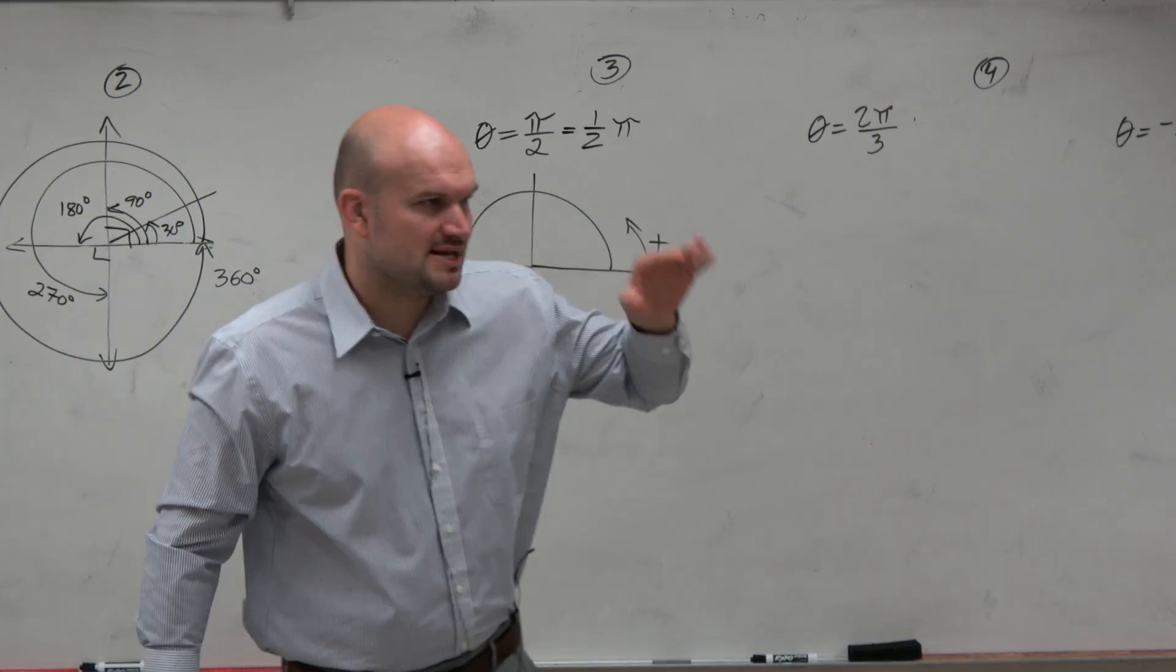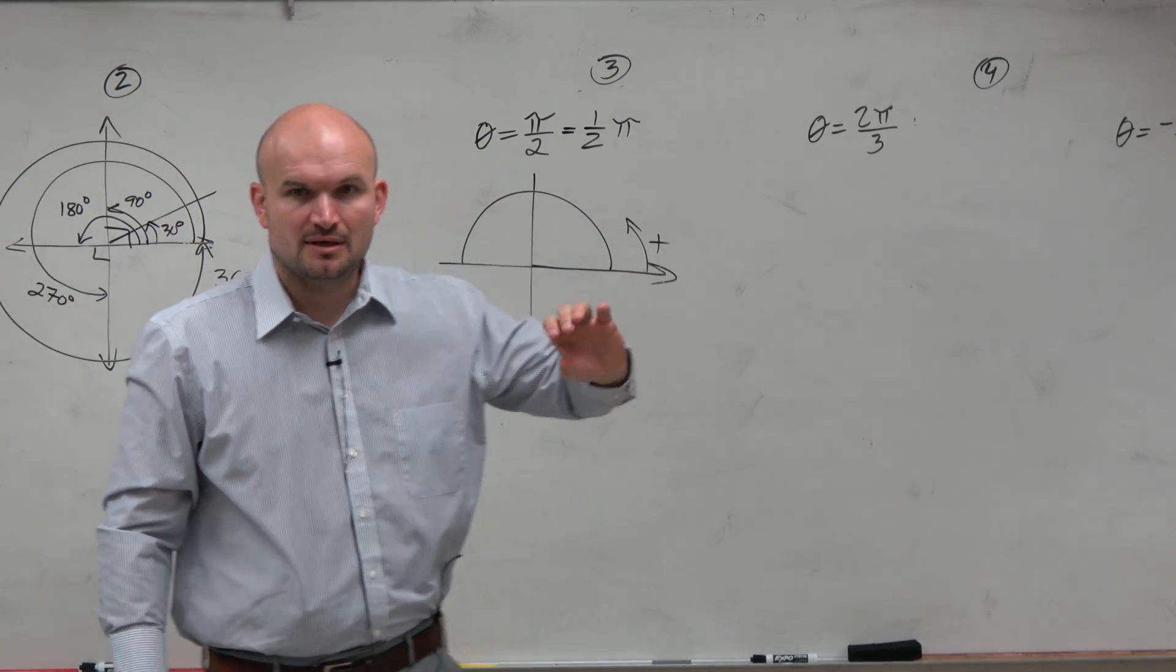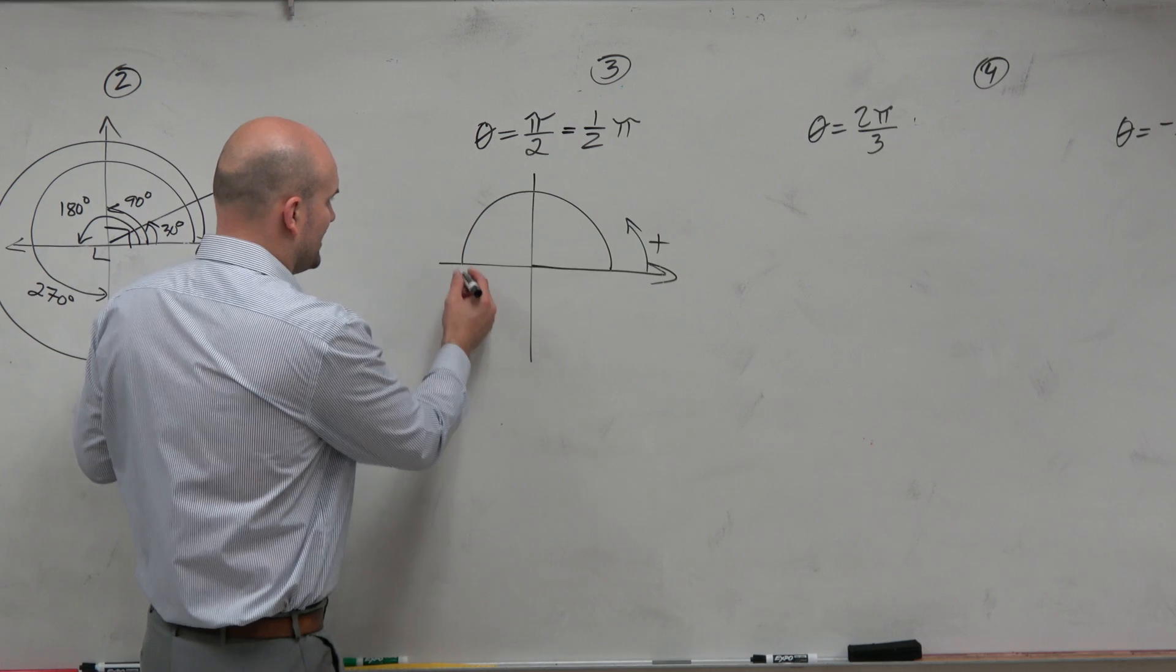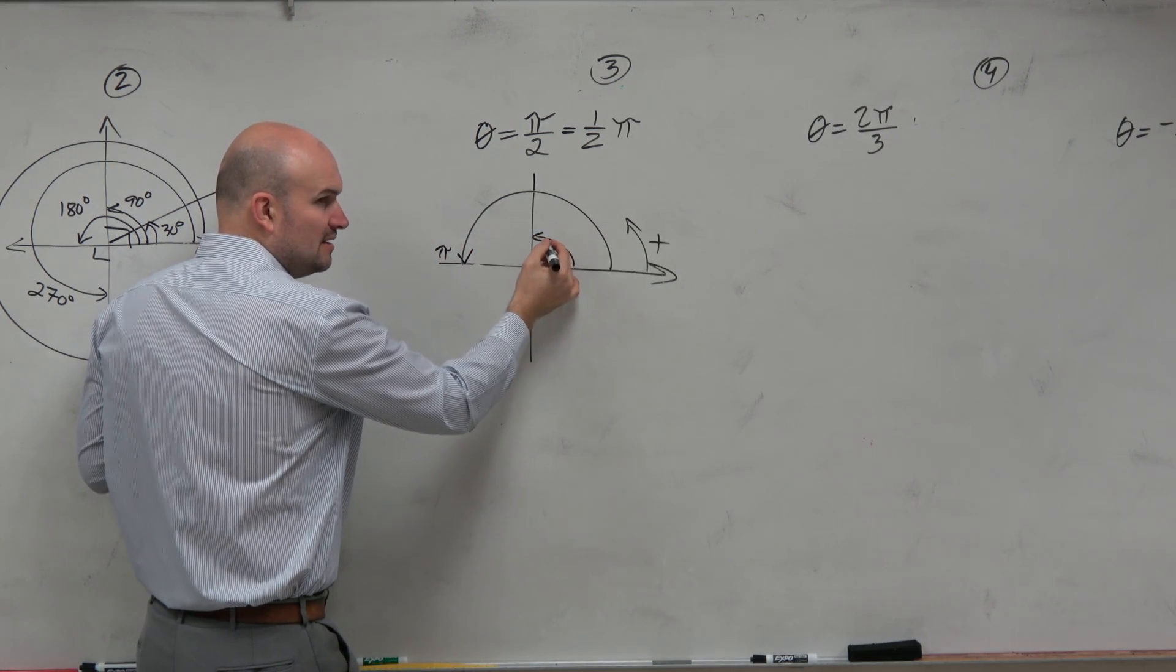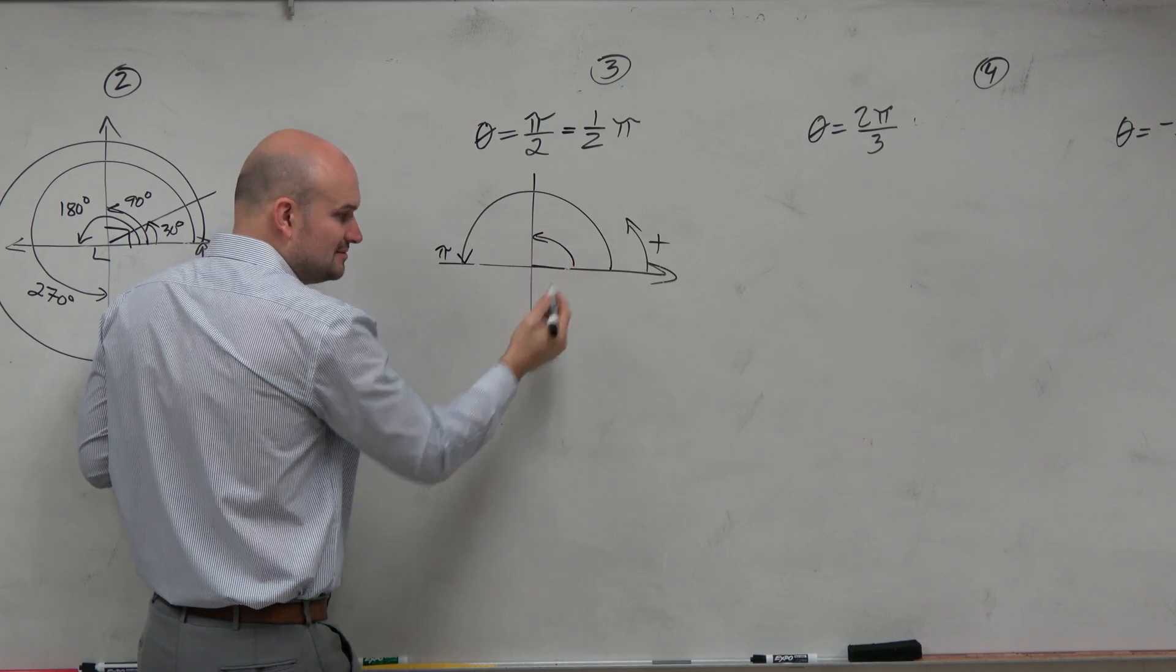Pi divided by 2 is the same thing as 1 half times pi. So if from here to here is pi, then from here to here is 1 half of pi, right?